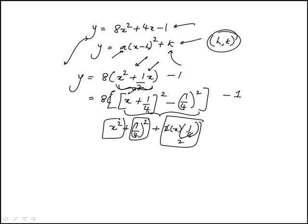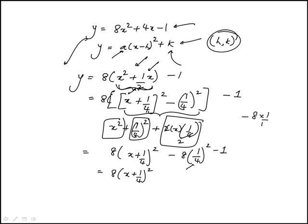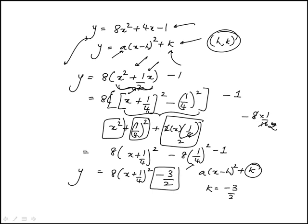The reason I'm doing this is to put x inside that square term. So this becomes 8 times x plus one-fourth squared, minus 8 times one-fourth squared, minus 1. One-fourth squared is 1/16, so this is minus 8 times 1/16, which is minus one-half, and minus 1 gives minus 3 over 2. Comparing to a times x minus h squared plus k, k equals minus 3 over 2. That's answer choice C.